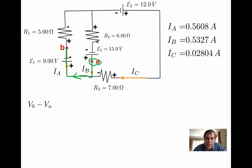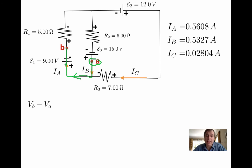Let's first do it with the shortest, most obvious path. I go down — there's no delta V since I'm in an ideal wire. Going left, still no change in potential. Now I'm going across the 9-volt battery, from higher potential to lower potential. So as I go this way to reach point B, the electric potential decreases. The delta V as I go through is minus 9 volts. And I'm at point B. So V at B minus V at A is minus 9 volts.